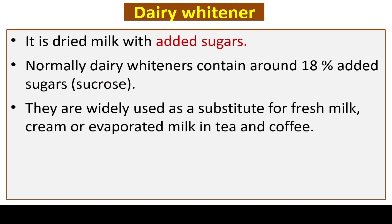Dairy whitener is dried milk with added sugars. Normally dairy whiteners contain around 18% added sugars such as sucrose. They are widely used as a substitute for fresh milk, cream, or evaporated milk in tea and coffee.